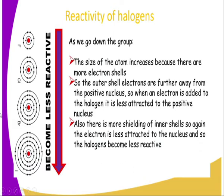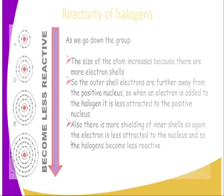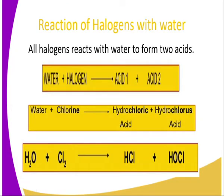Because the electron is less attracted to the nucleus, the halogen becomes less reactive as we go down the group. Fluorine is the most reactive member of the halogens, followed by chlorine, then bromine, and iodine. Understanding this reactivity trend will help us understand how they react.